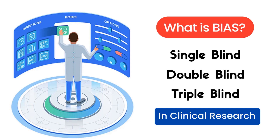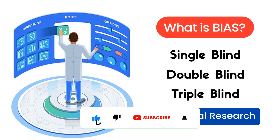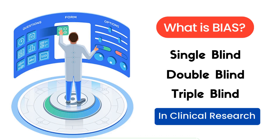Hello everyone, welcome to another video. As discussed last week, in this video we are going to look at single blinded, double blinded, and triple blinded trials. We are going to focus on what exactly bias is in clinical trials and understand the distinction between single, double, and triple blind. Make sure you like, share, and subscribe.